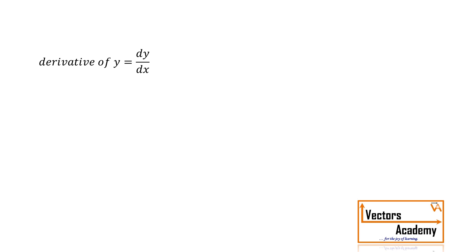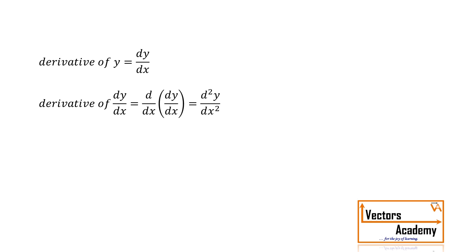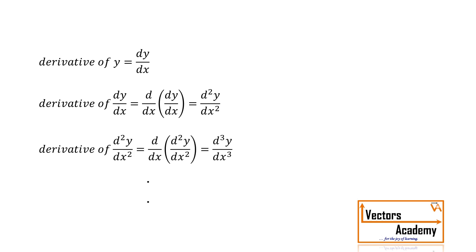Now what if we differentiate dy by dx again with respect to x? The term which we will get is d²y upon dx². That is what we call as second order derivative. Now if we differentiate it again, we will get the third order derivative, and so on.